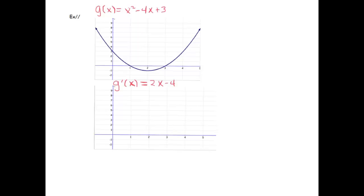In the last video, we determined using the definition that the derivative of g(x) = x² - 4x + 3 is 2x - 4. Now I want to compare the graphs to show you the logic that connects the two of them.